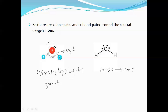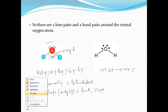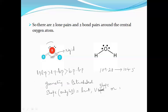The geometry is tetrahedral because the steric number is 4. But for the shape, we ignore the lone pairs and consider only bond pairs. When we see only the bond pairs, the water molecule looks like a bent molecule, V-shape, or angular. So the shape of the water molecule is bent, V-shape, or angular according to the VSEPR theory.